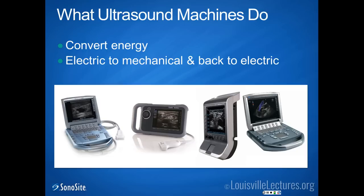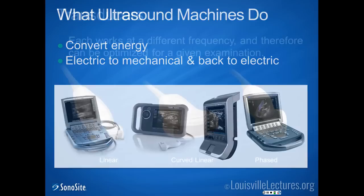What do ultrasound machines basically do? They're pretty simple — they convert energy from one form to another. The machine is plugged into the wall, so electrical energy gets converted to mechanical energy by the probe. The probe sends out an ultrasound wave into the tissue you're examining. Echoes come back from the tissue, are collected again by the probe, and converted back into electrical energy for display on the screen. Very simple in concept.